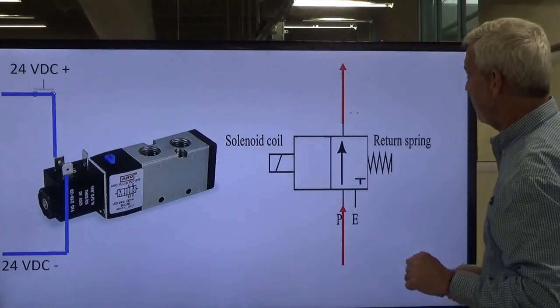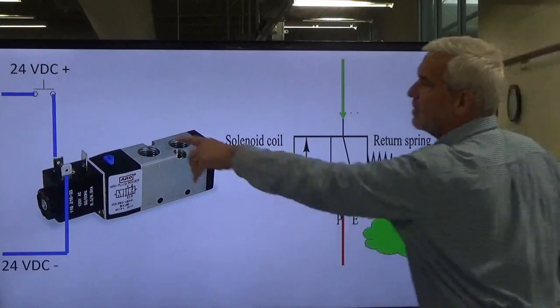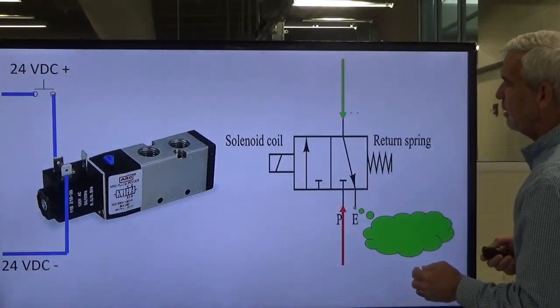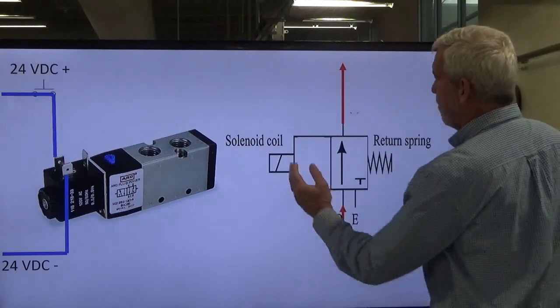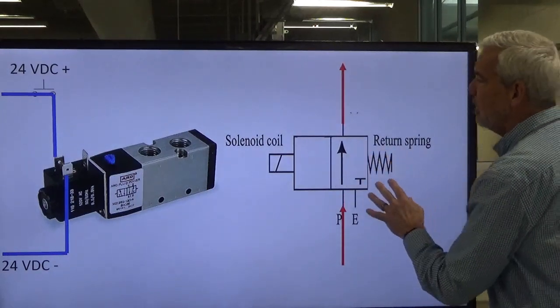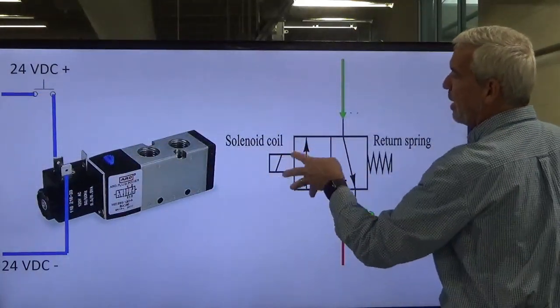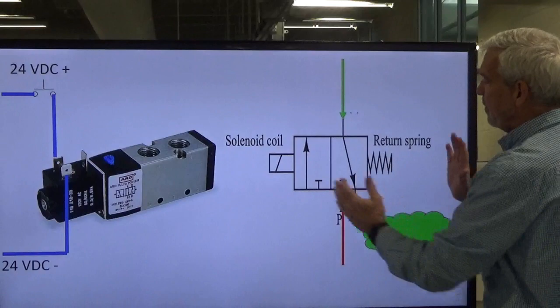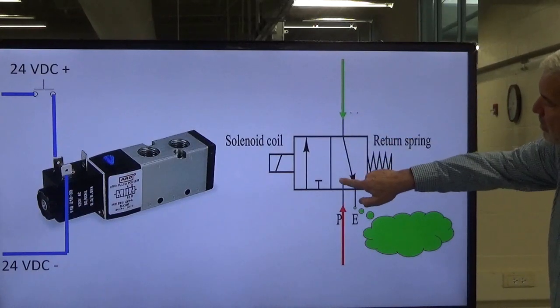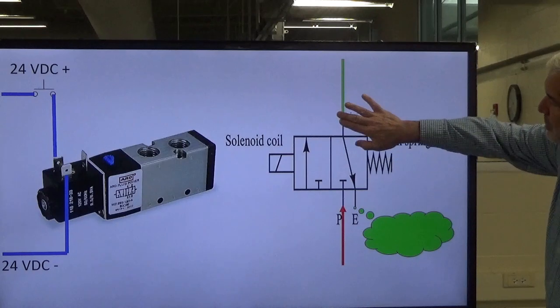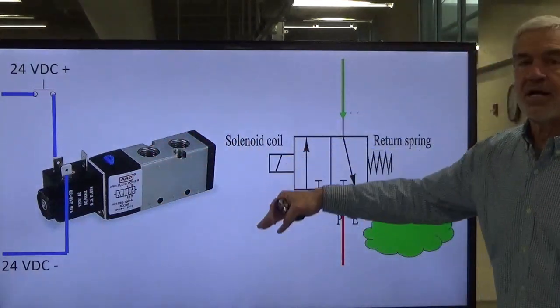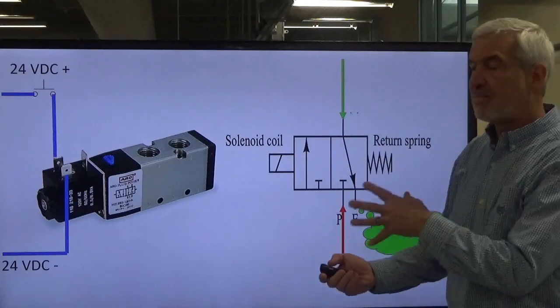When we de-energize, I've let my button off, we no longer have a magnetic field. The spring pressure is now dominant. When we do energize, the magnetic field is stronger than the spring. However, when we take our finger off the button, spring pressure is the dominant pressure. It shoves it back, we've blocked off the system air. Now anything captured in our system goes to exhaust and is exhausted out into the atmosphere. That's the difference between hand-operated and solenoid-operated shutoff valves.